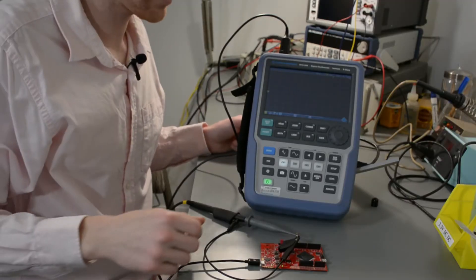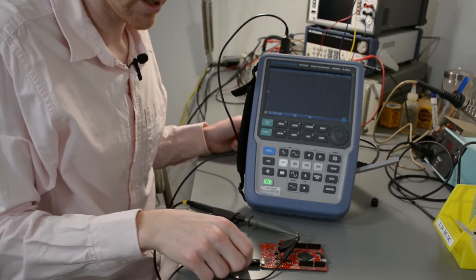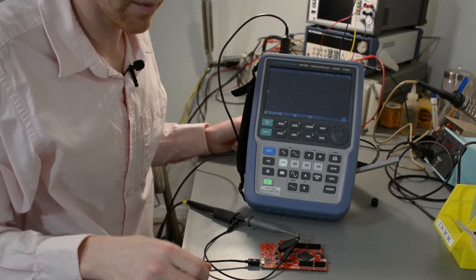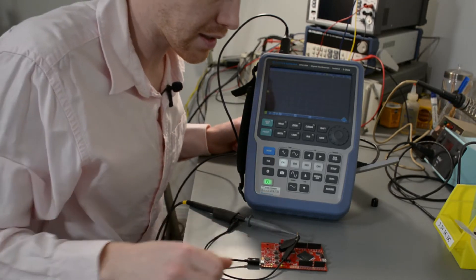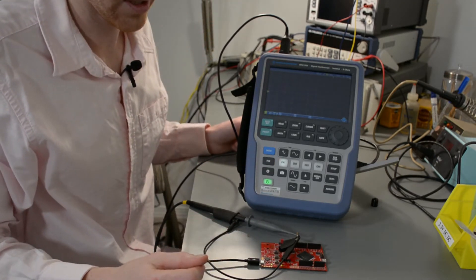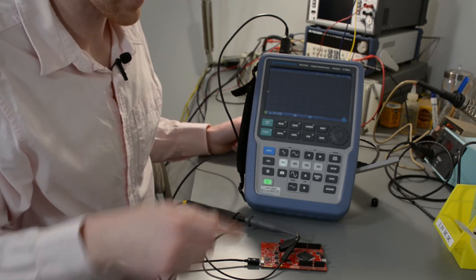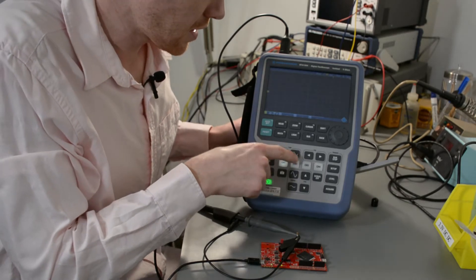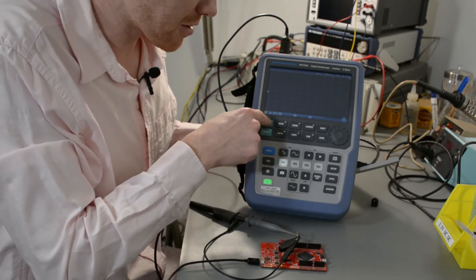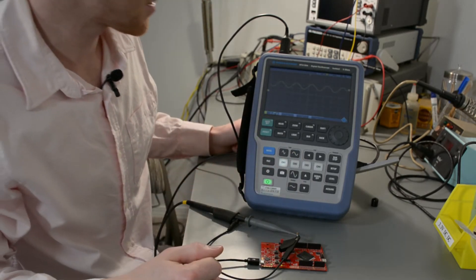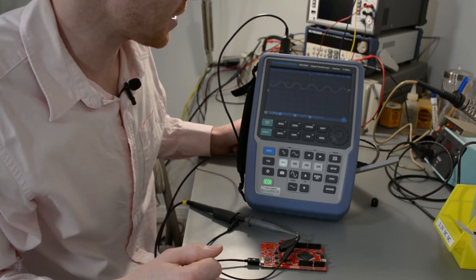So I've got it hooked up now with channel 1 going to this signal I'm generating on this XMC microcontroller board, so it's just, I think it's a sine wave or a triangle or something, and we'll just try the auto set, since we're not in school anymore, see if it finds it, there it is.